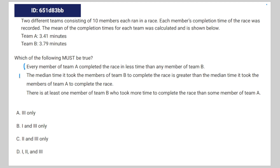Looking at answer choice one: every member of Team A completed the race in less time than any member of Team B. We're assuming information about individual terms in the data sets given only the average — the mean of the data sets — which you simply can't do. So choice one is not necessarily true.